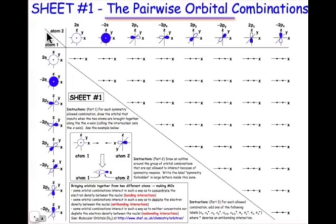On the very next slide, we'll look at the set of combinations in which the 2s orbital on atom 1 combines with either the plus or the minus version of the 2s orbital on atom 2.